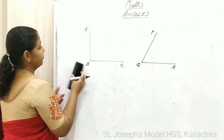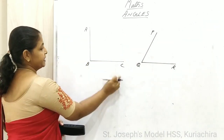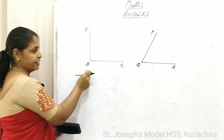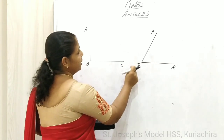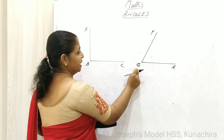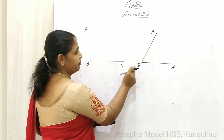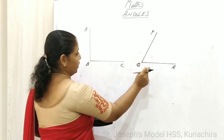In the first figure, two lines BA and BC are meeting at B. An angle is formed. In the second figure, QP and QR are meeting at Q. An angle is formed again between the lines QP and QR.